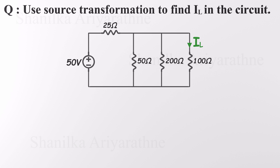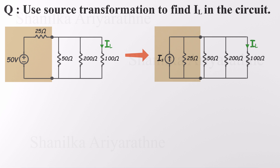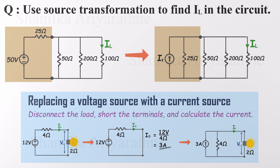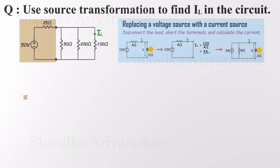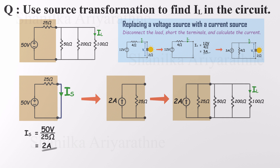Sure, we could go the long way — combine resistors, calculate the total current, then backtrack to find IL. But why not take a shortcut? Source transformation can simplify the process dramatically. Look closely at the voltage source in series with a resistor. If we convert that into a current source in parallel with the same resistor, that one move turns the whole resistor network into a parallel circuit. The key step is determining the value of the new current source: we isolate the voltage source and its series resistor, short the rest of the circuit, and calculate the current using Ohm's Law. In this case, the short circuit current comes out to 2 amps, so we replace the voltage source and resistor with a 2 amp current source in parallel with a 25 ohm resistor.